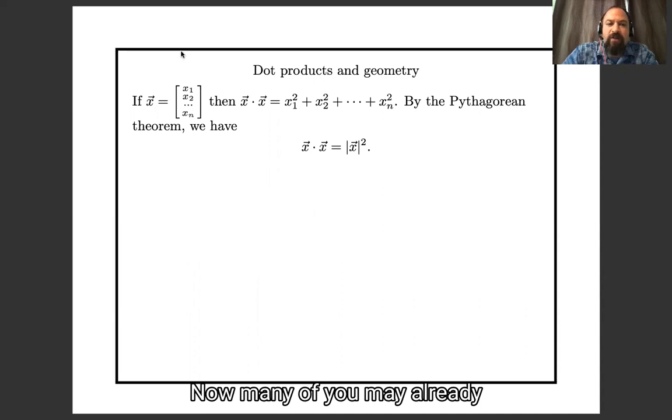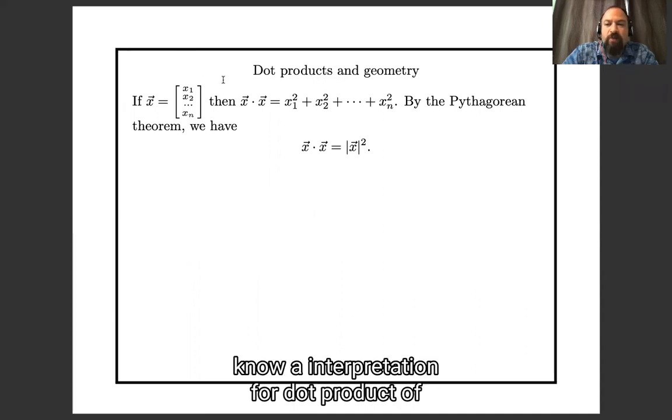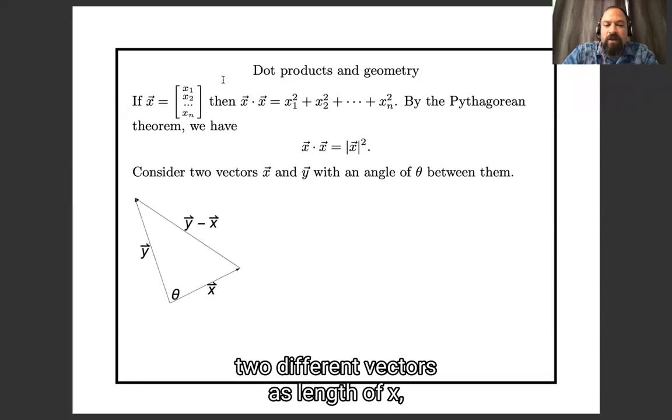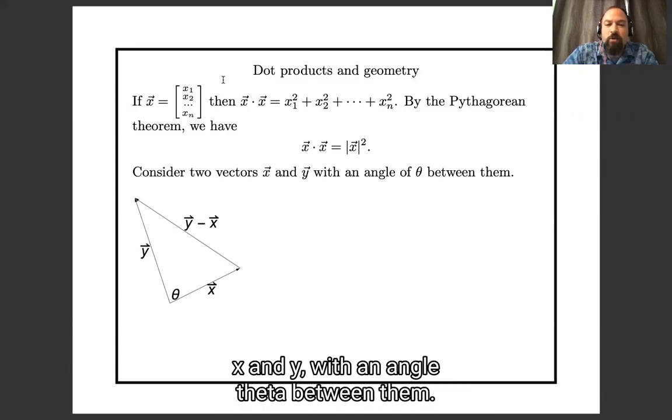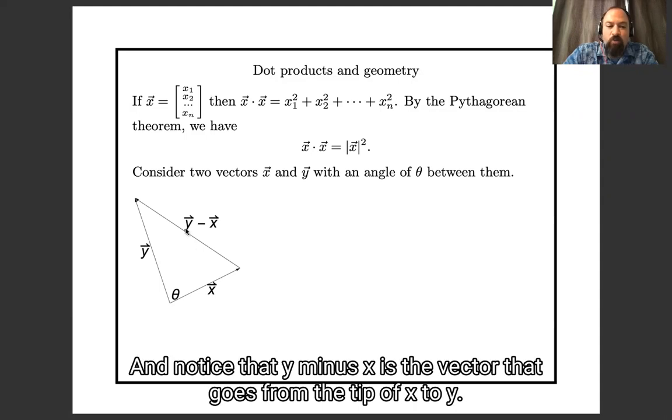Now, many of you may already know an interpretation for a dot product of two different vectors, as length of x, length of y, cosine theta, and I want to show you where that comes from. So, suppose I have two vectors, x and y, with an angle of theta between them, and notice that y minus x is the vector that goes from the tip of x to the tip of y.